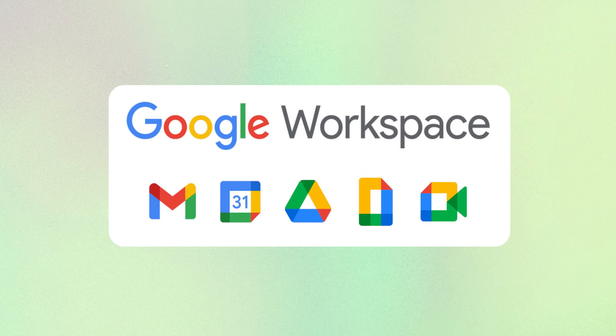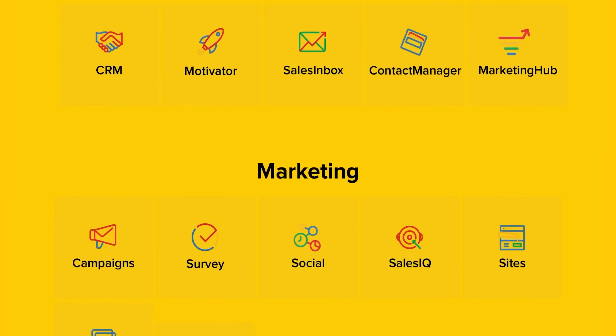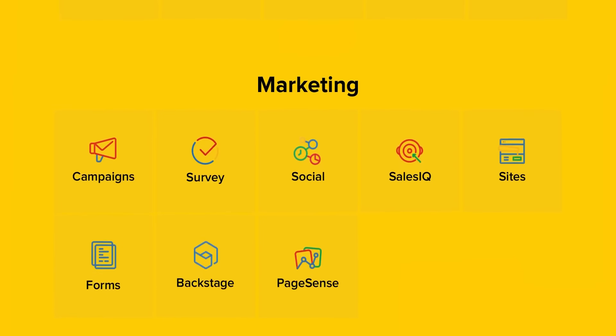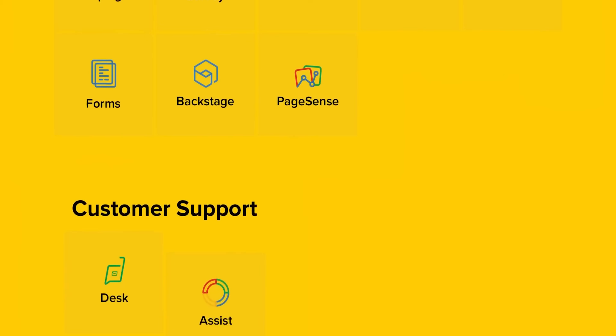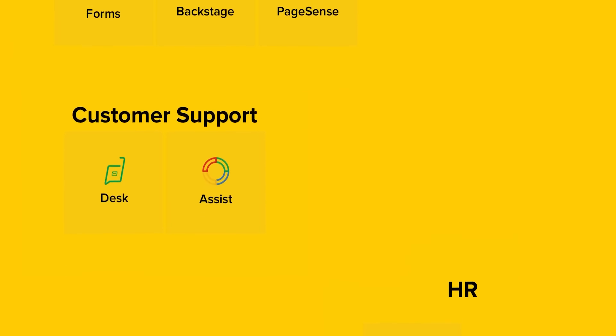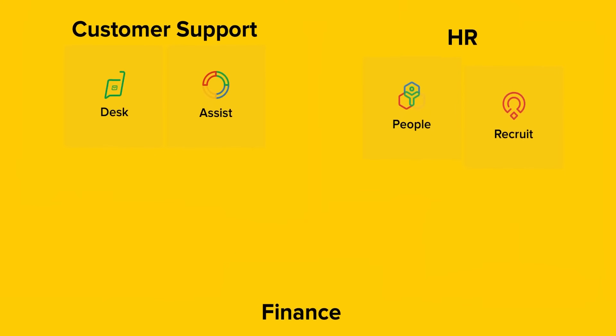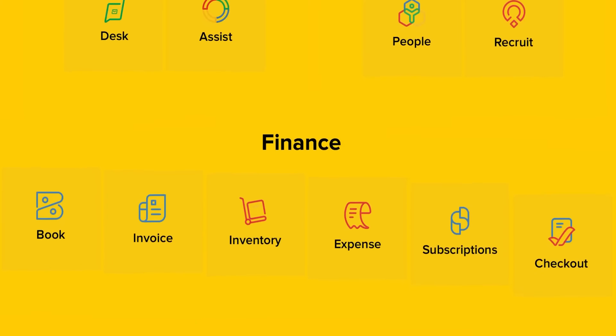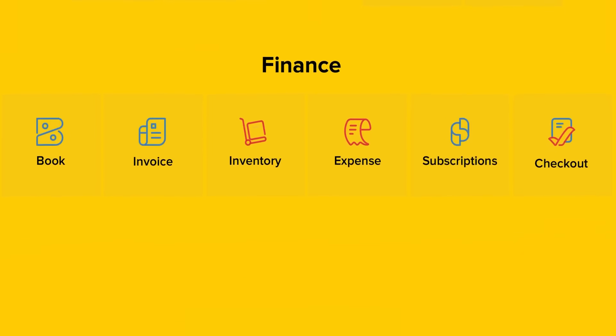Zoho Mail is part of a broader suite of Zoho apps, just like Gmail from Google Workspace. Other than Mail, they offer 55 apps catering to each category like sales, marketing, finance, email and collaboration.